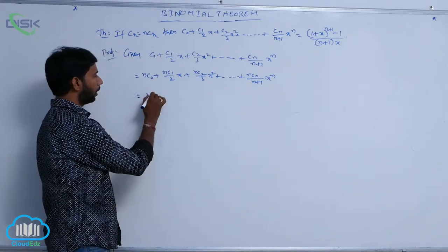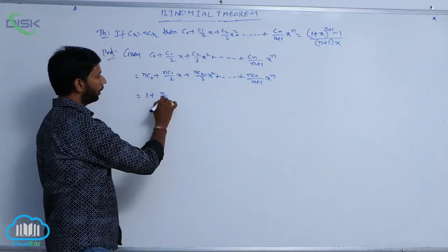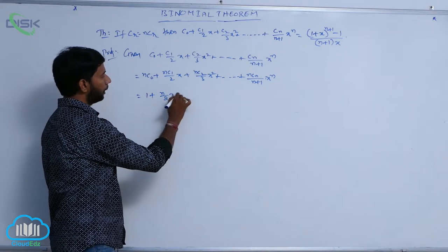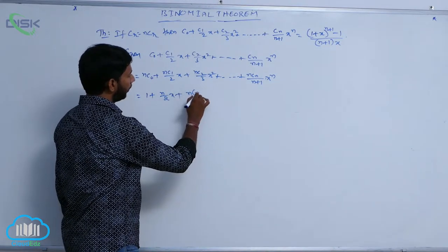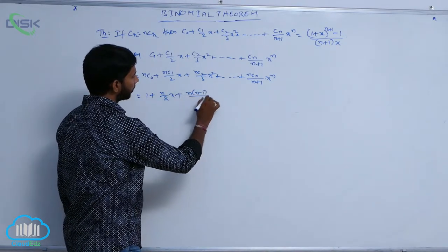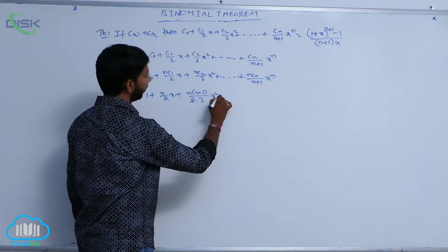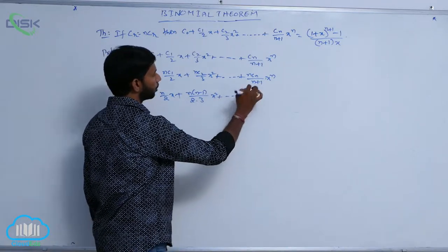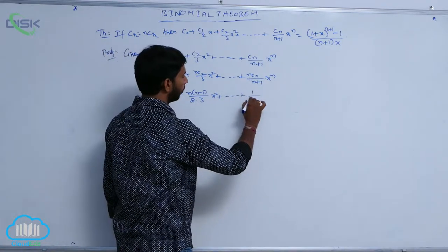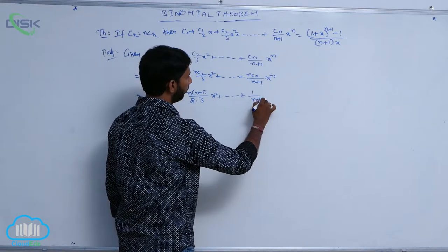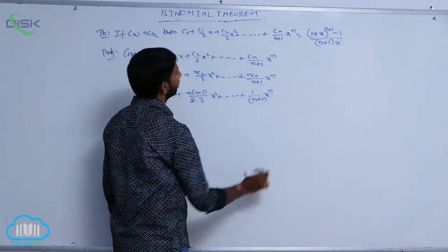Here, nC₀ = 1, nC₁ = n, nC₂/3·x² + n(n-1)/(2·3)·x² + ... and nCₙ = 1, so the last term is 1/(n+1)·xⁿ.